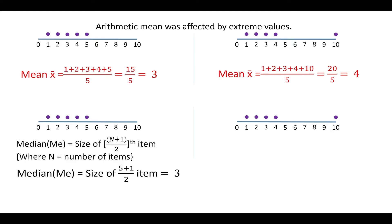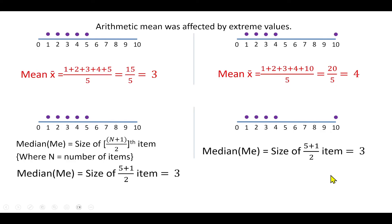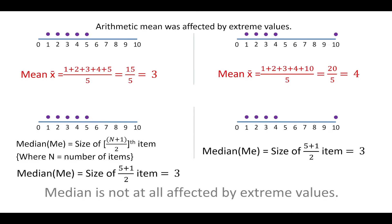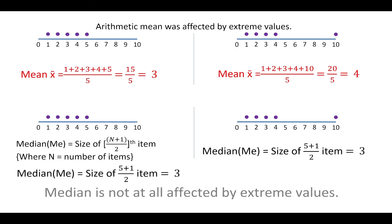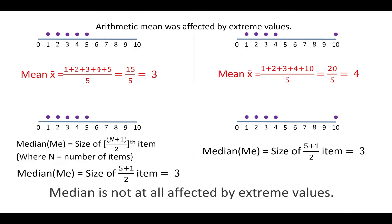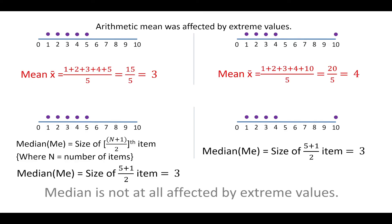Now, let us consider an outlier which is 10. The value of median will again be the size of the (n+1)/2 th item, that is (5+1)/2, which is the third item. The third item is again 3. So the value of median remains the same in spite of the outlier. Hence, median is not at all affected by extreme values. This is a very important principle — in data science, we will be using median wherever there are outliers. We will not be using mean. Median will be used whenever there are any outliers.